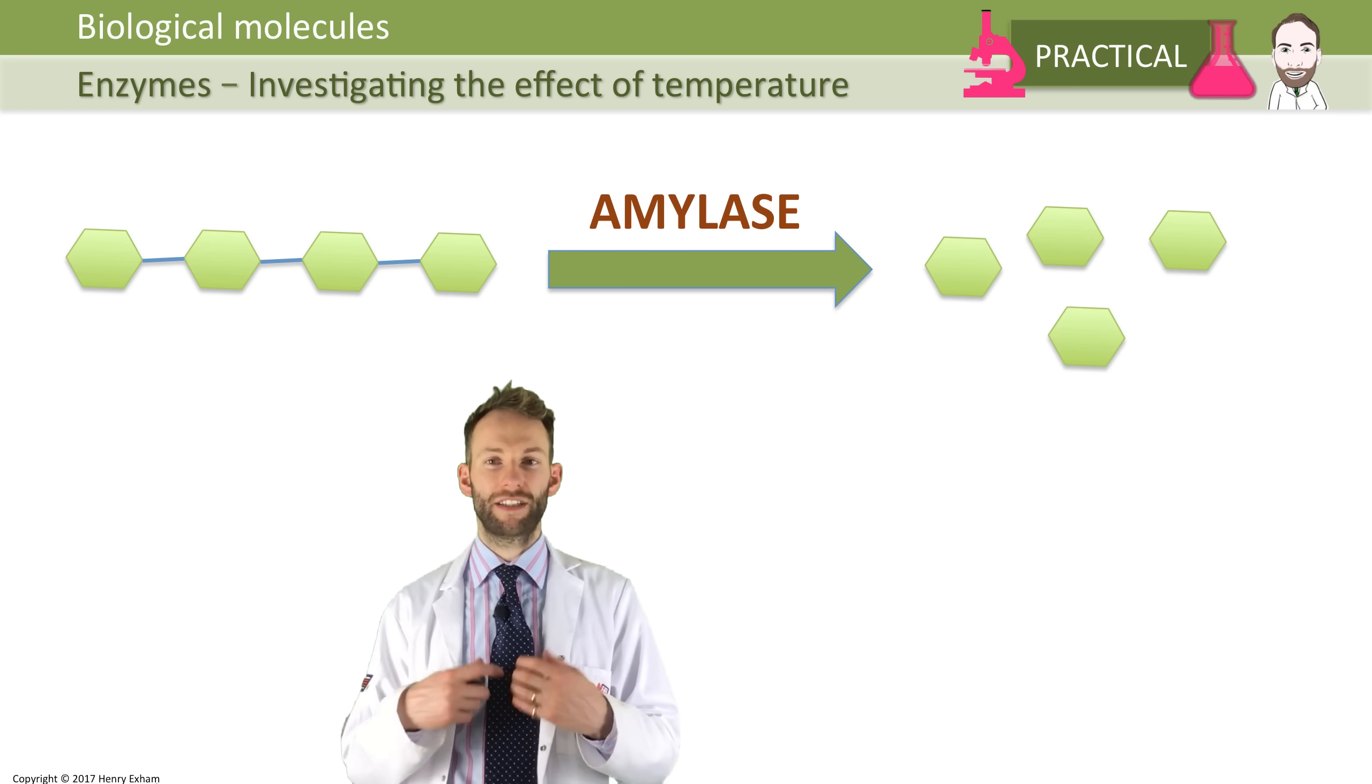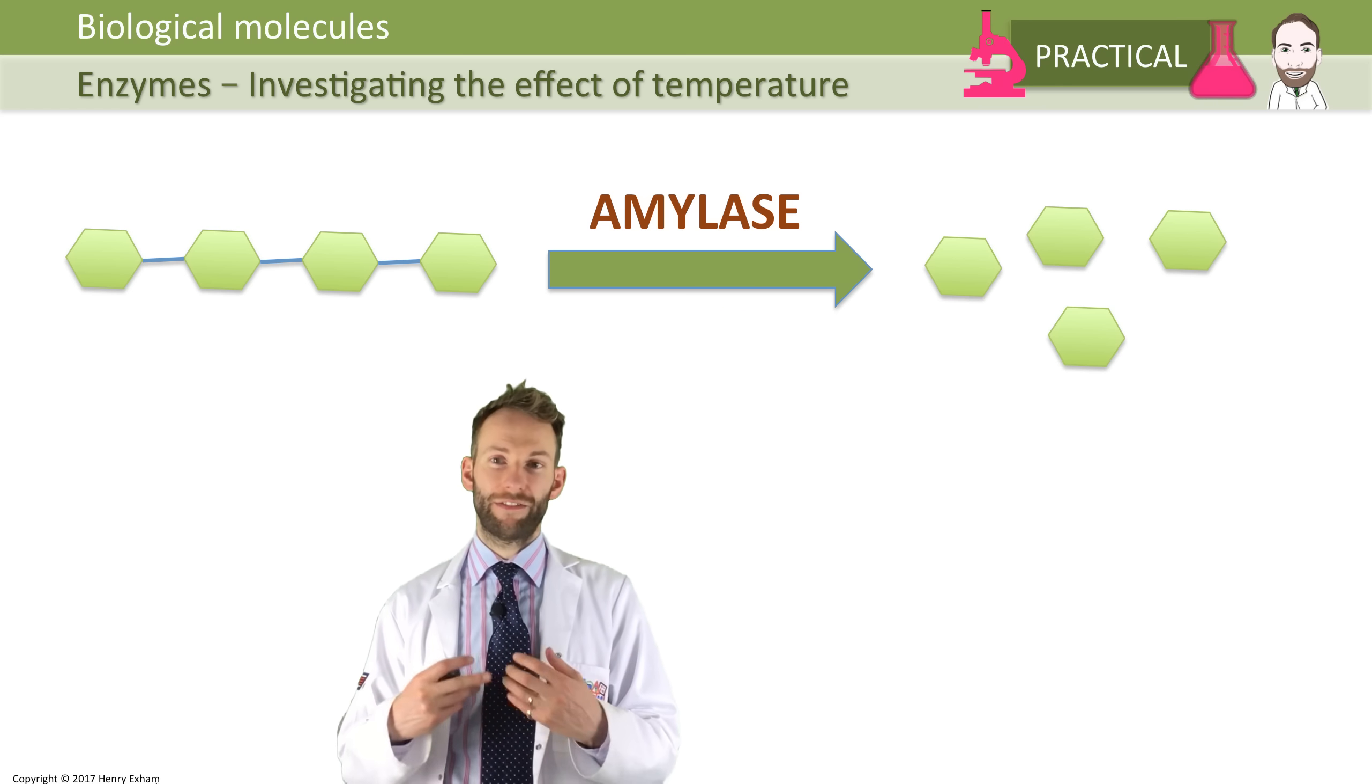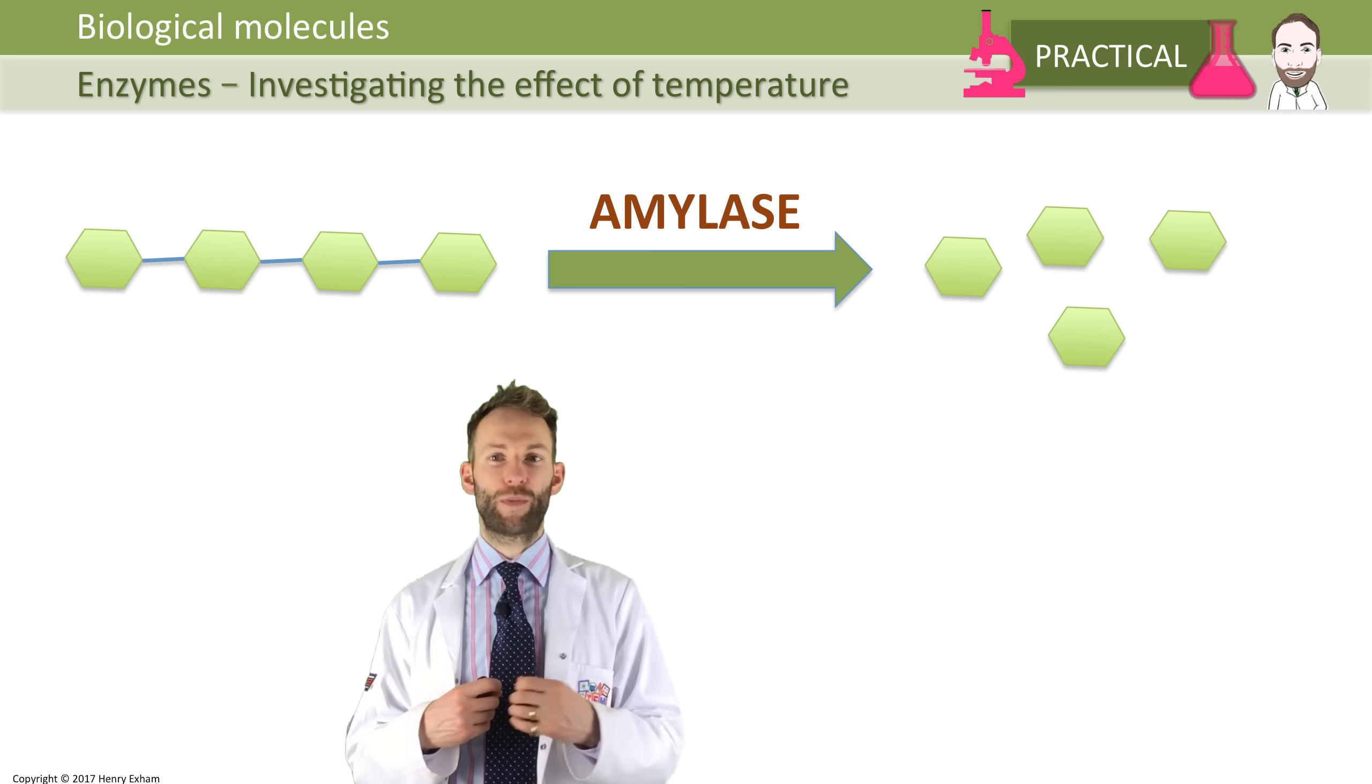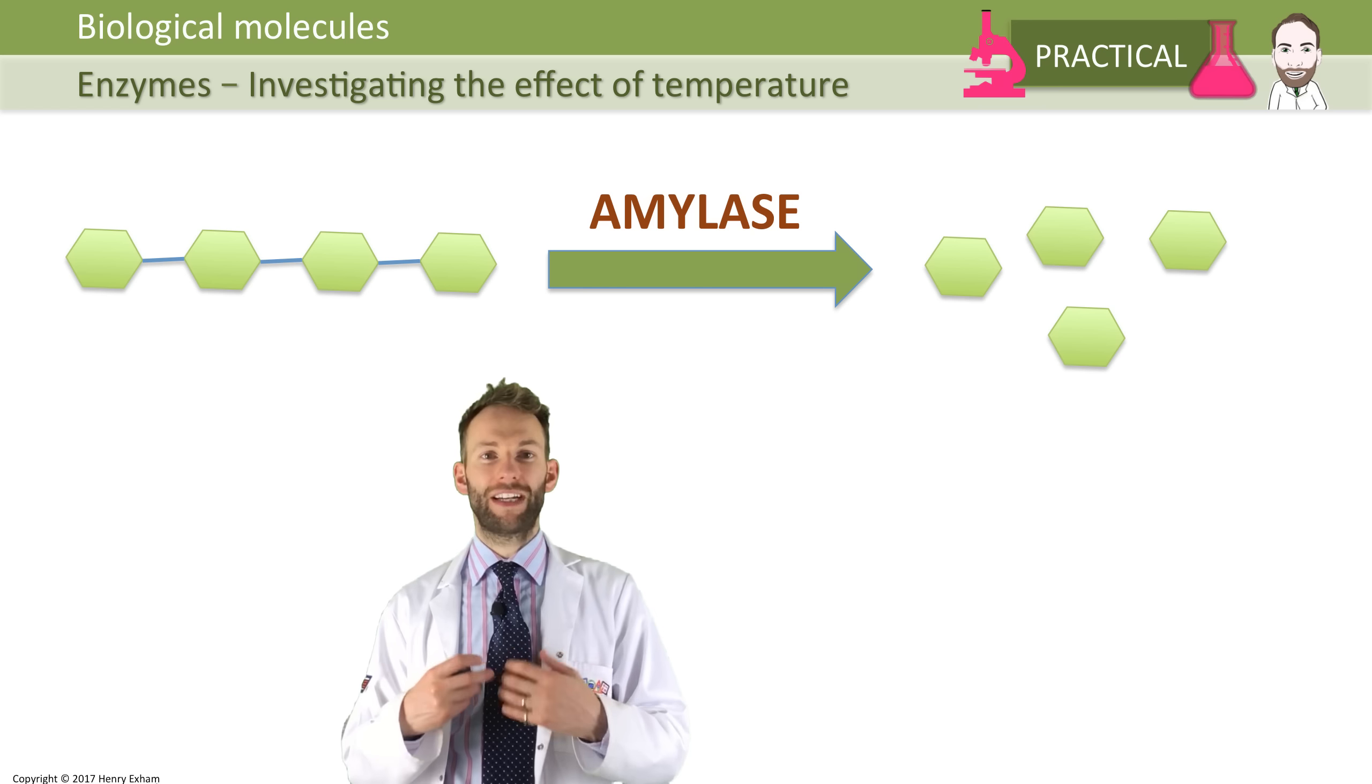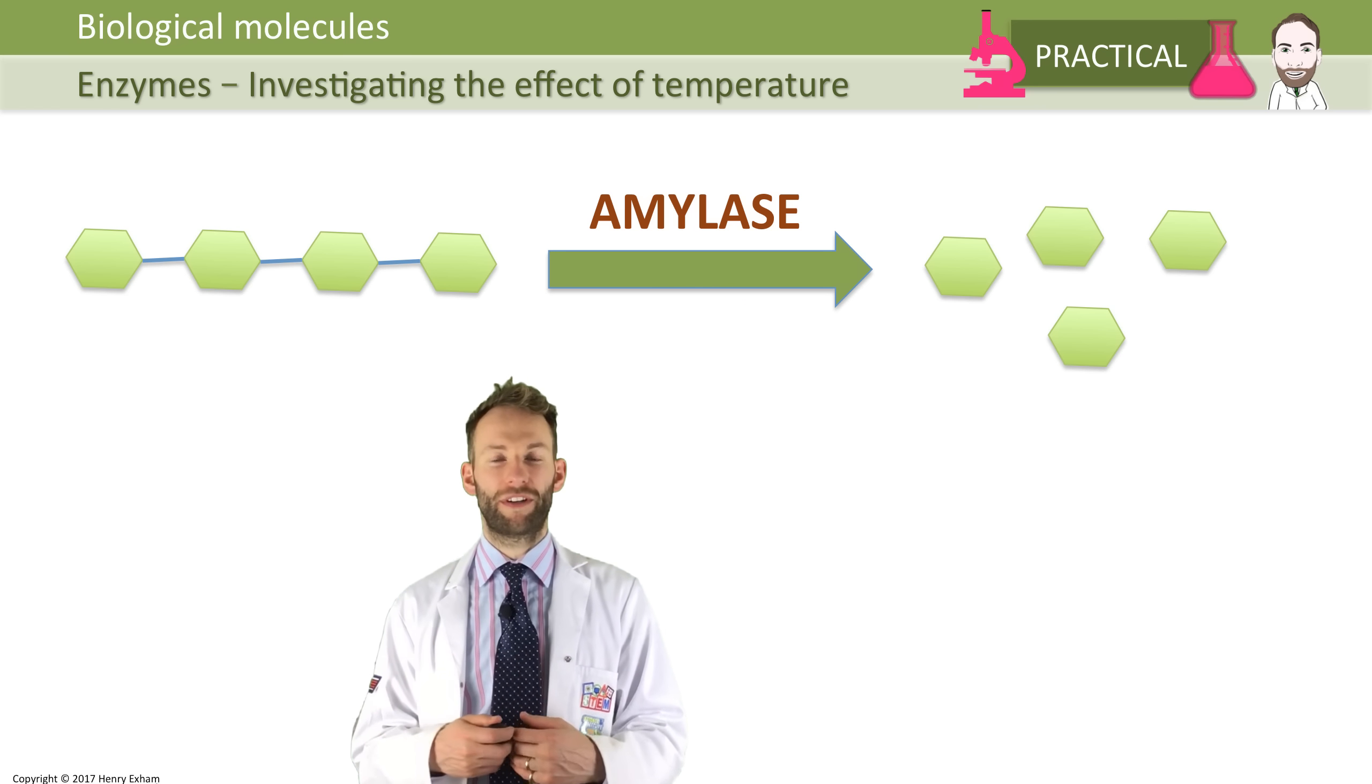You can test for starch using iodine. If we use iodine to test starch, it will go blue-black if there is starch present. Then we add some amylase. We can see when the amylase has broken down all the starch because the reaction will stop going blue-black, so we know the amylase has done its job.